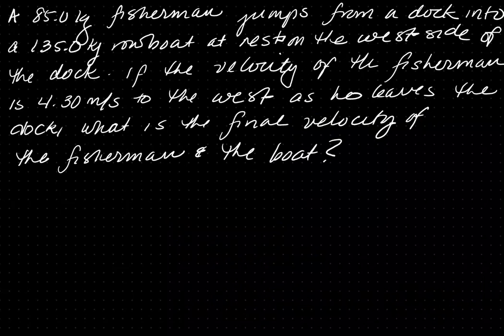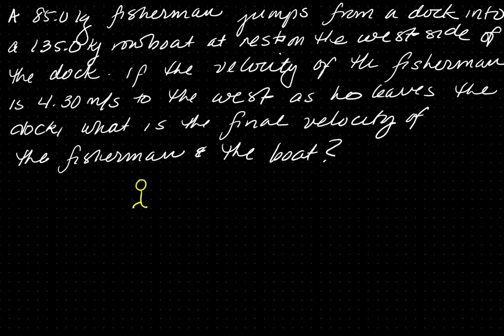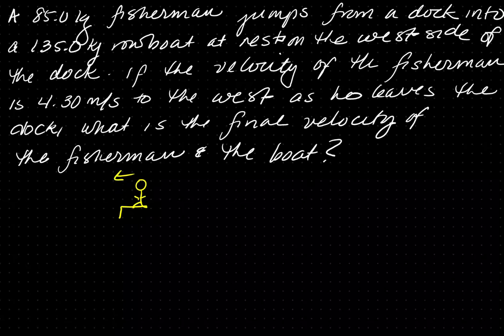In this problem we have a fisherman that jumps from a dock to a rowboat. He has a velocity of 4.30 to the west when he leaves the dock. So draw your picture out. We have the fisherman jumping with a velocity going to the west, and we have a boat. They are separate — two pictures — and then at the end they are together because we want the final velocity of the fisherman and the boat together.